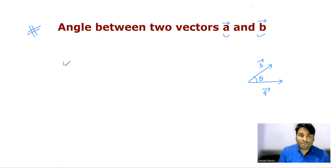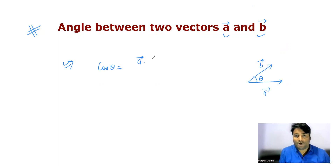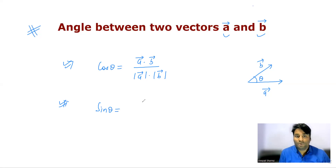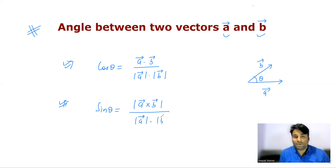You need to remember the formula: cos theta is equal to a dot b divided by magnitude of a into magnitude of b. One more formula to remember: sin theta is equal to the magnitude of the cross product of the two vectors divided by magnitude of a into magnitude of b.